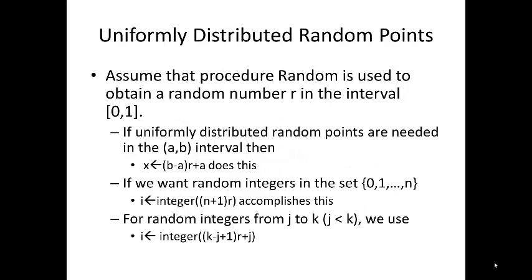Now we consider some basic questions about generating random points in various geometric configurations. Assume that the procedure random is used to determine a random number R in the interval 01. If uniformly distributed random points are needed in AB, then basically what we can do is map X to B minus A times R plus A.